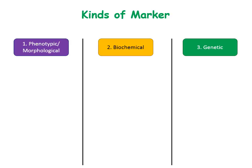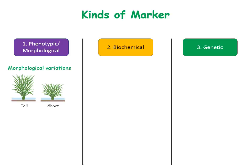Phenotypic markers distinguish individuals based on their morphological characteristics. For example, height is a phenotypic marker that differentiates tall plants from short plants. Similarly, resistance is another marker which distinguishes resistant and susceptible plants.